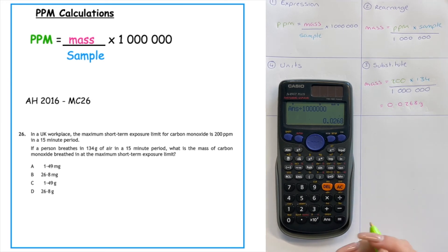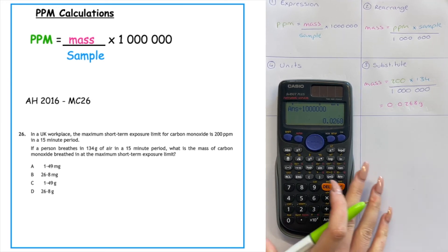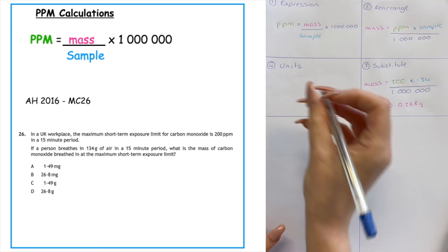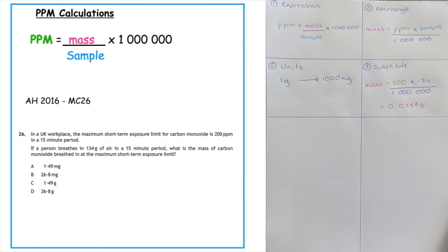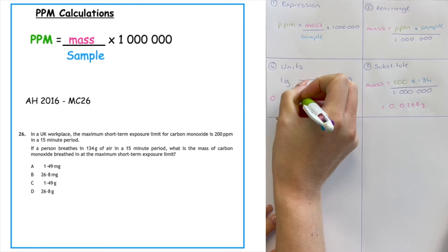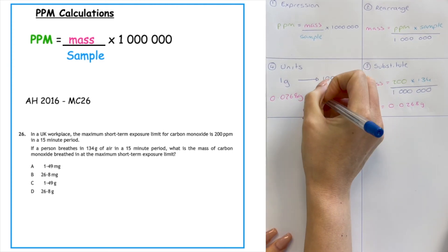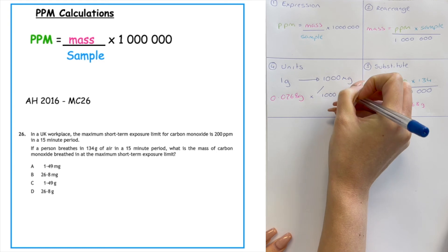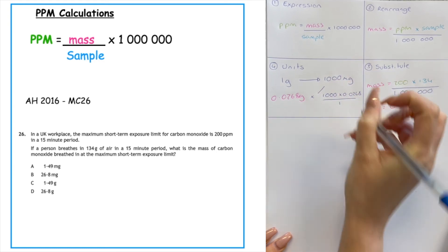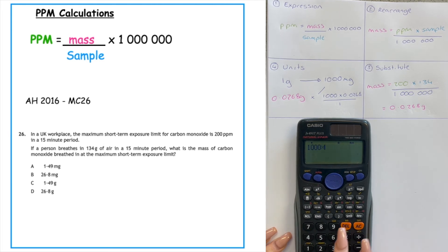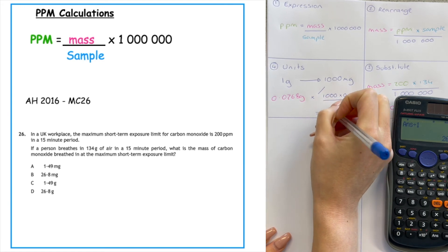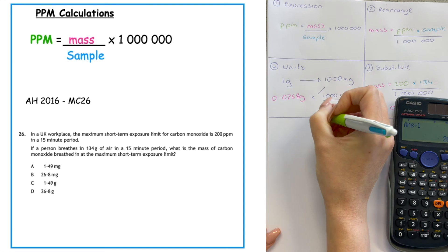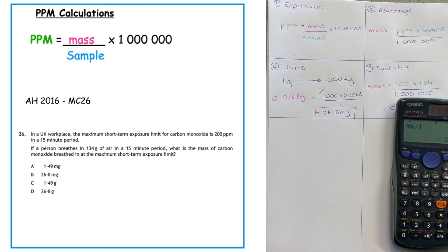The result is in grams, so answers A and C cannot be correct. Doing the unit conversion: one gram equals one thousand milligrams. Cross multiplying: one thousand times 0.0268 divided by one gives 26.8 milligrams.